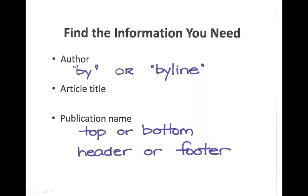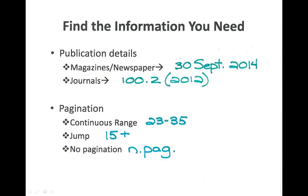You need to be able to pull out the information from those sources to document it in your essay. Every documentation style will look for a few key things, and oftentimes they're really hard to find in your source — and that is where students mostly struggle. First, you have to find the author, sometimes identified by a byline. You always need the article title from periodicals and the publication name. If you're looking at the print version, those can often be found in the header or footer.